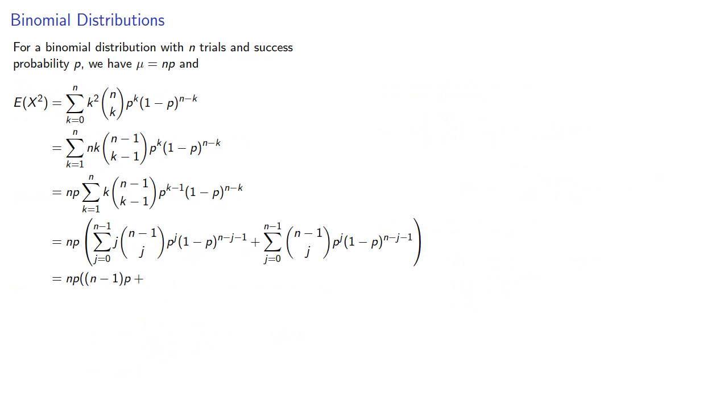And similarly, if we look at this second summation, well that is again the binomial expansion of p plus 1 minus p to power n minus 1. And that works out to be 1. And so the expected value of X squared is np times n minus 1 p plus 1.